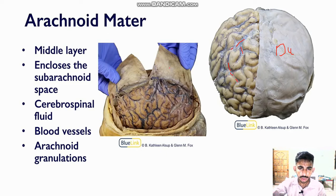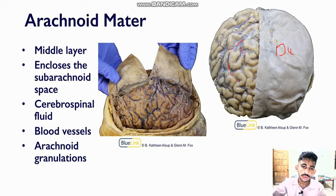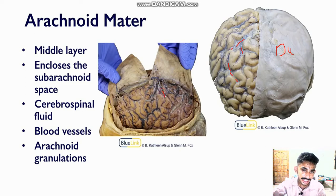So if you look at this image, you can see here that if we pull on the dura mater we can clearly see our arteries and veins — our blood vessels being suspended here and clearly visible in arachnoid mater.